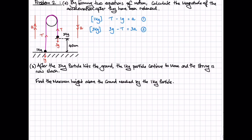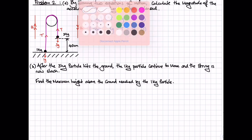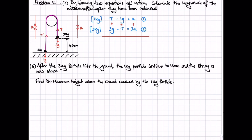Adding the two equations eliminates tension: three G minus G gives two G, and three A plus A gives four A. Therefore acceleration equals two G divided by four, which works out to 4.9 meters per second squared.